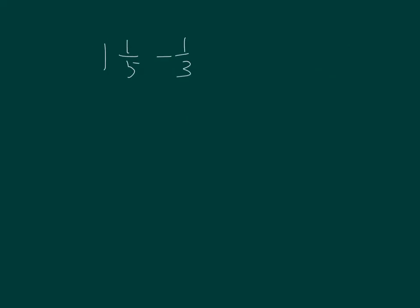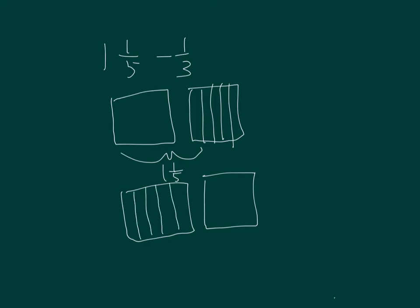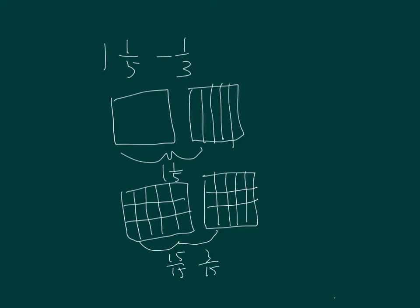1 and 1 fifth minus 1 third. Are the units the same? Nope, they're not. So we'll have to make like units. We have fifths and thirds, so we get to fifteenths. One whole is equal to fifteen-fifteenths, and one-fifth is equal to three-fifteenths, so that's fifteen-fifteenths plus three-fifteenths.